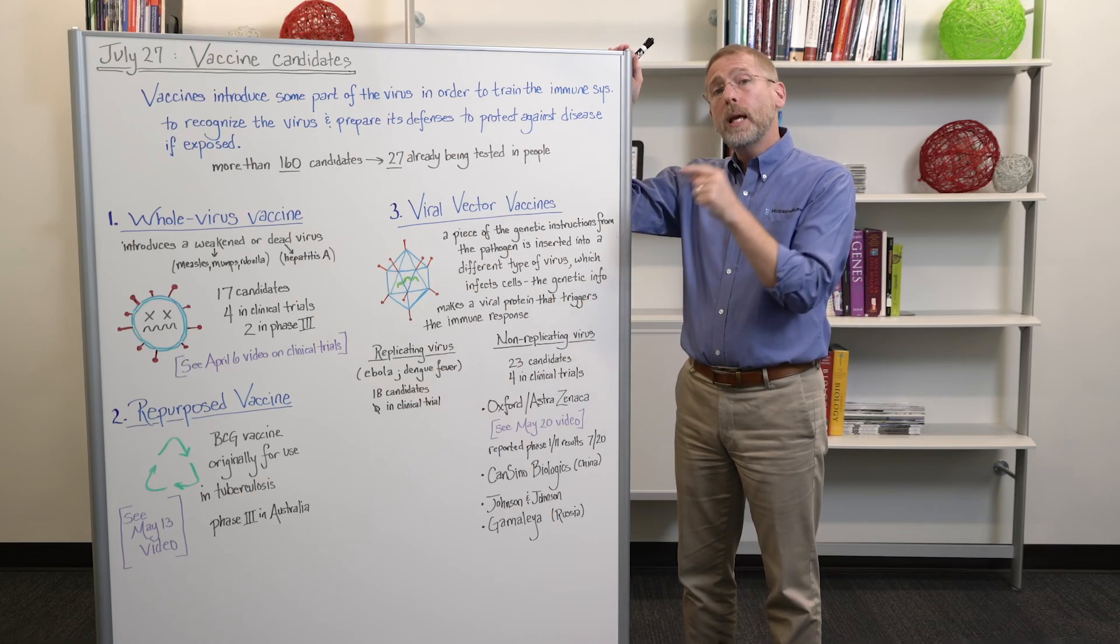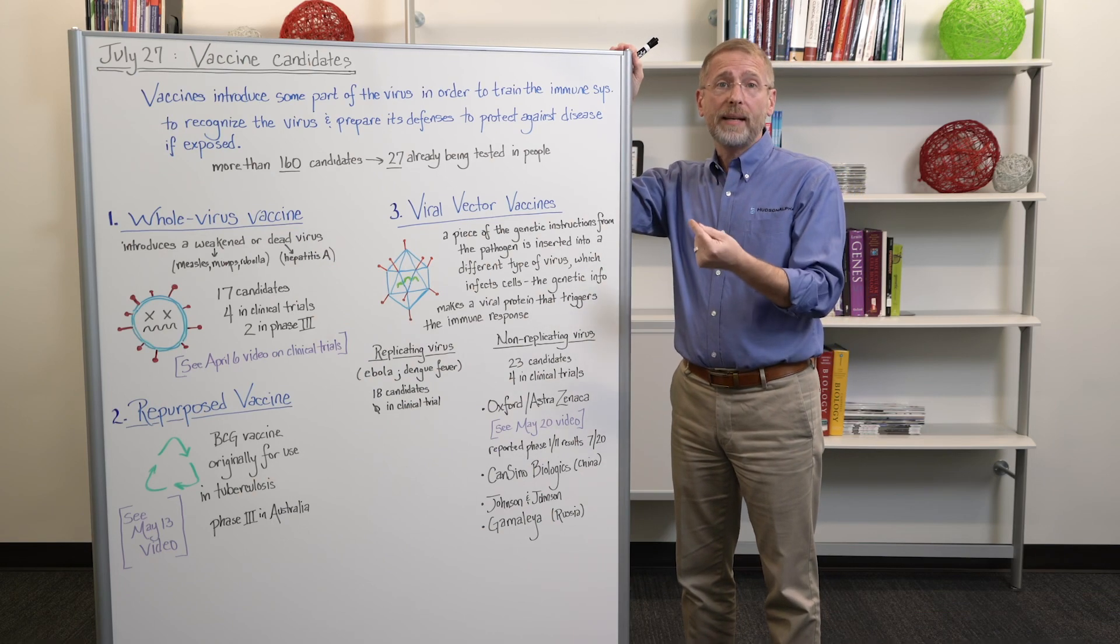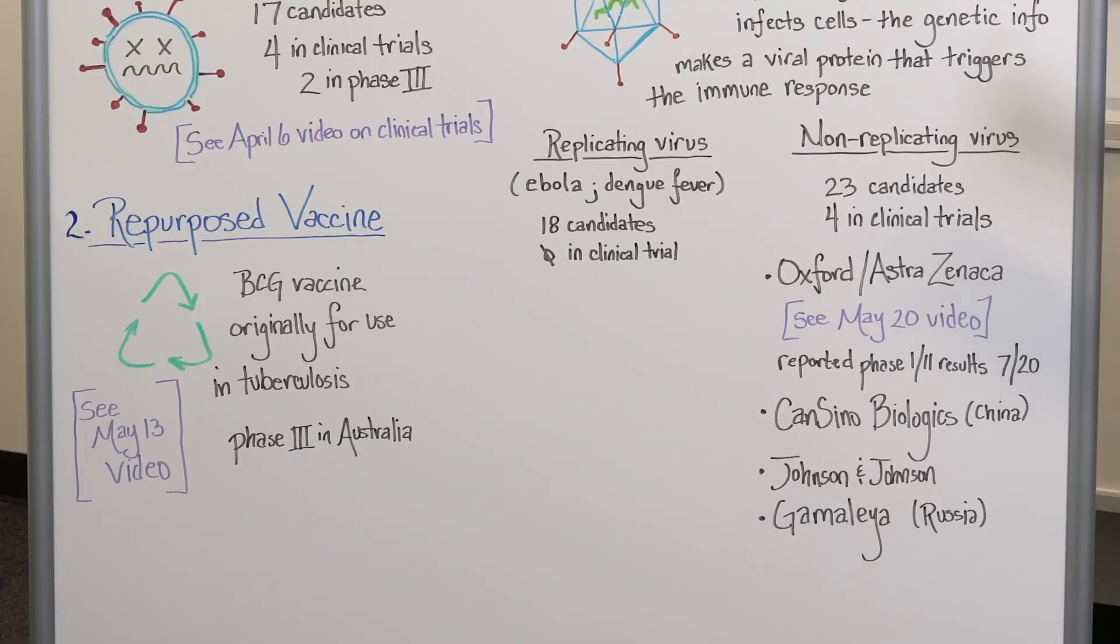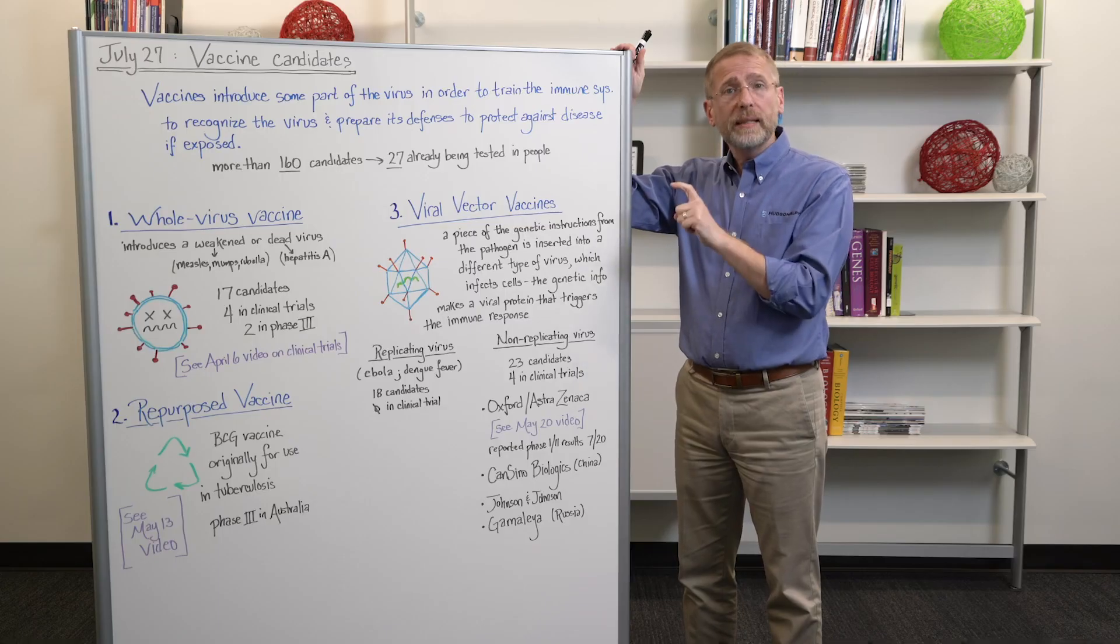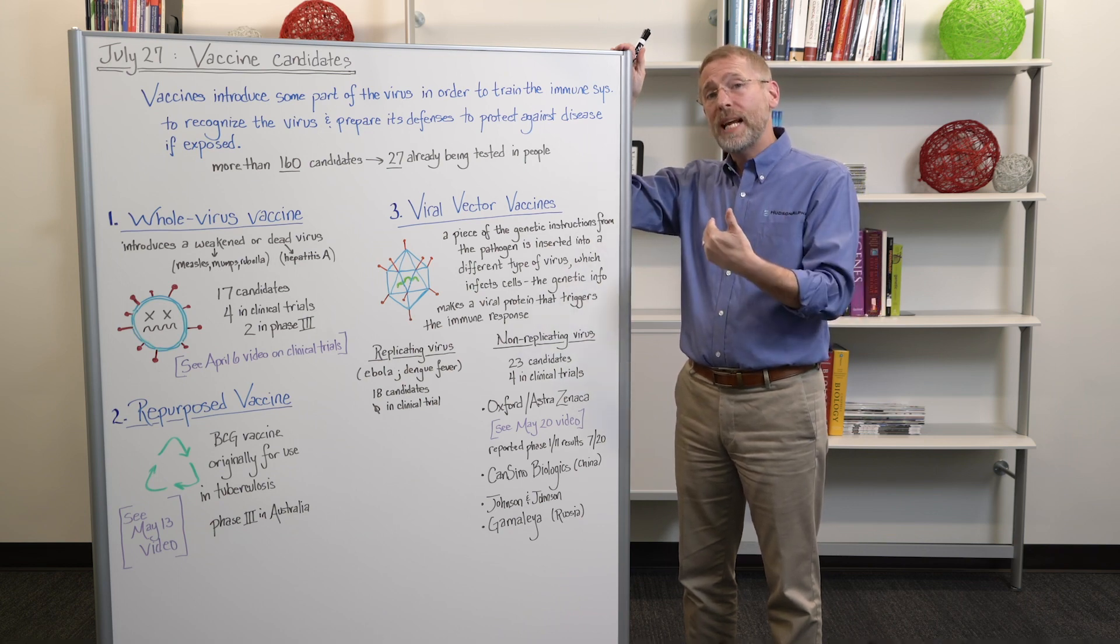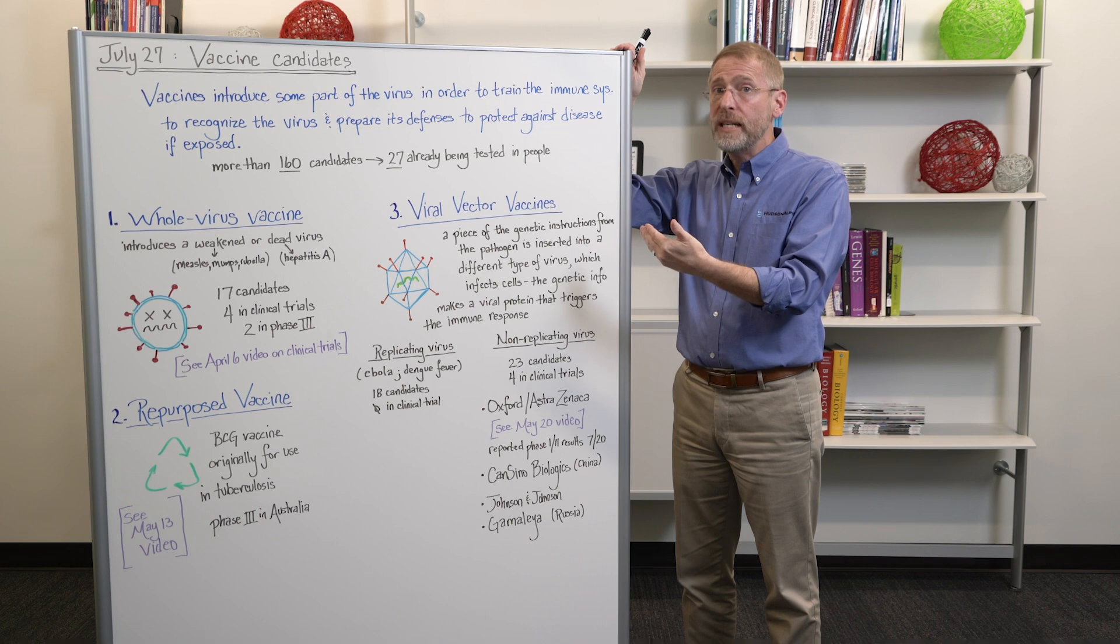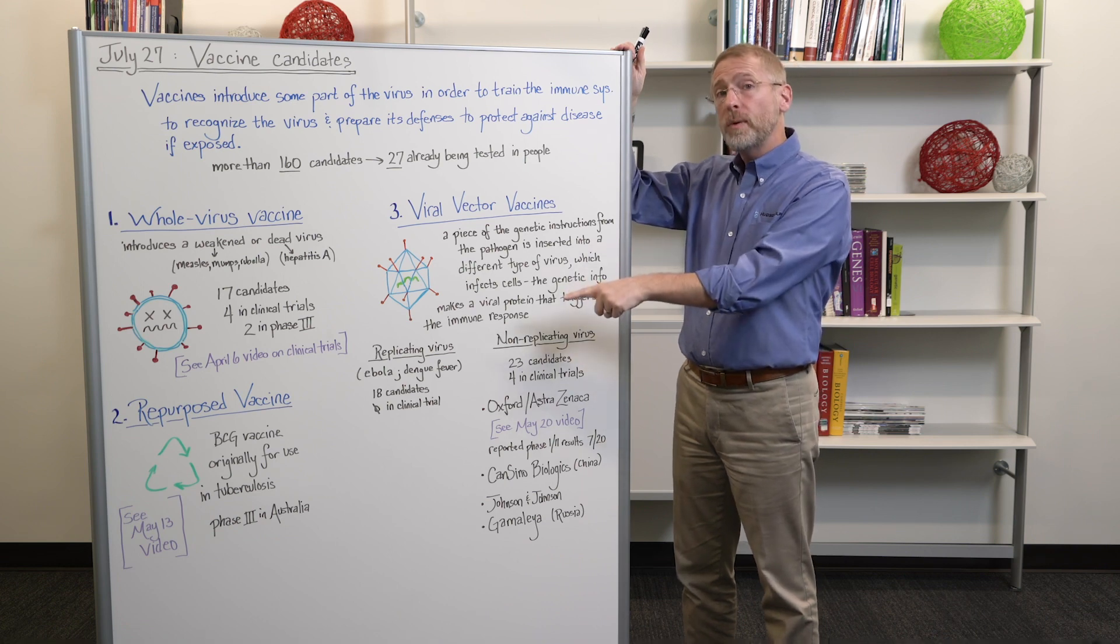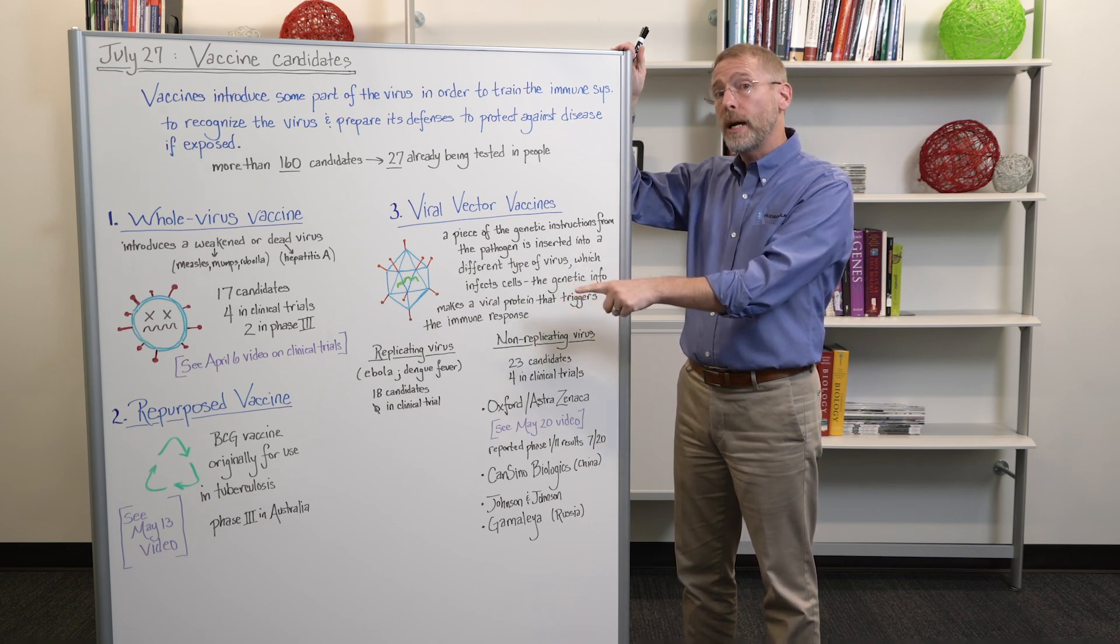Okay. The second category is actually using existing vaccines and repurposing them. And we talked about this in the May 13th Beyond the Blog video. So this is the BCG vaccine that is used in many parts of the world for tuberculosis. And intriguingly, there are hints that this vaccine actually provides broad immunity against other infectious agents, potentially SARS-CoV-2.